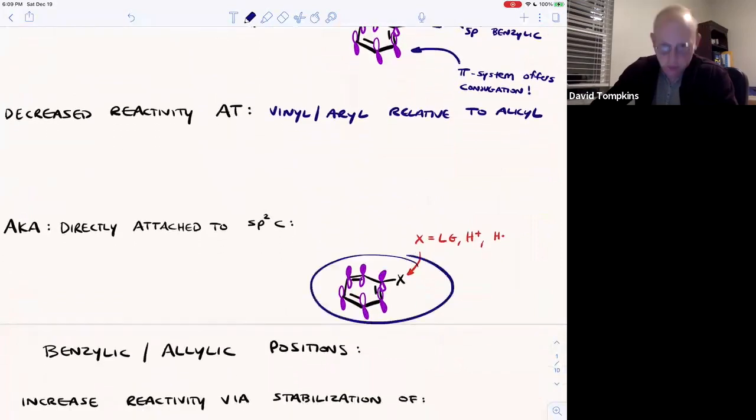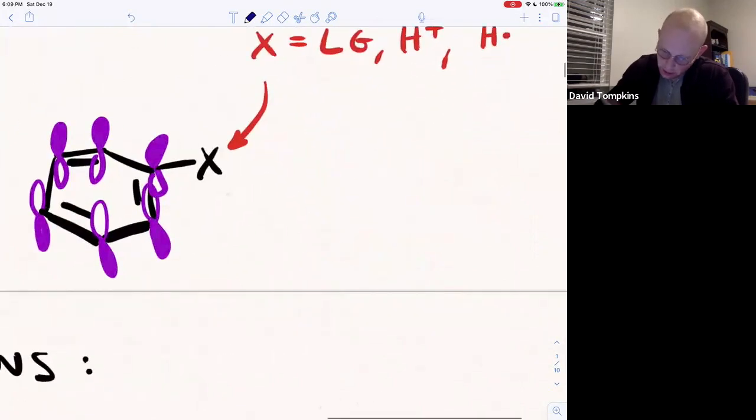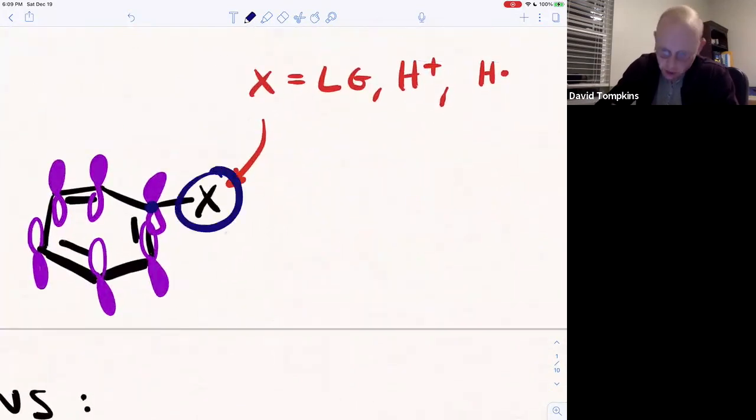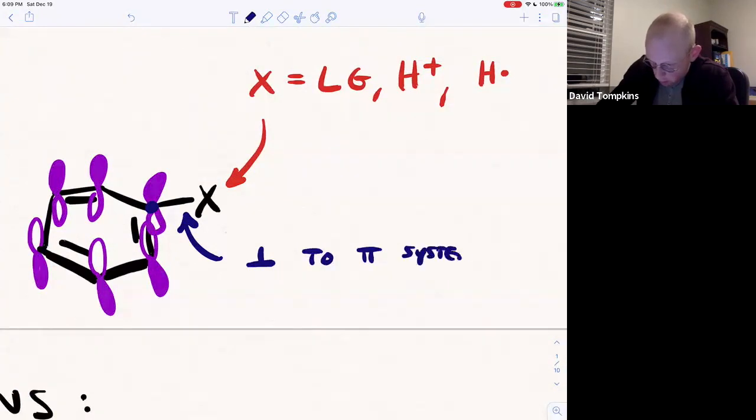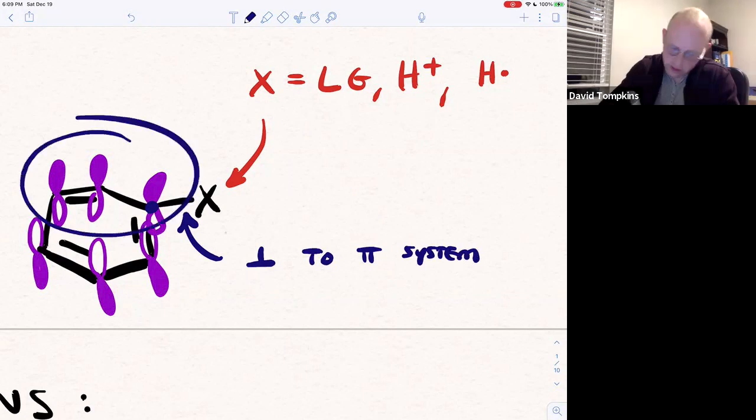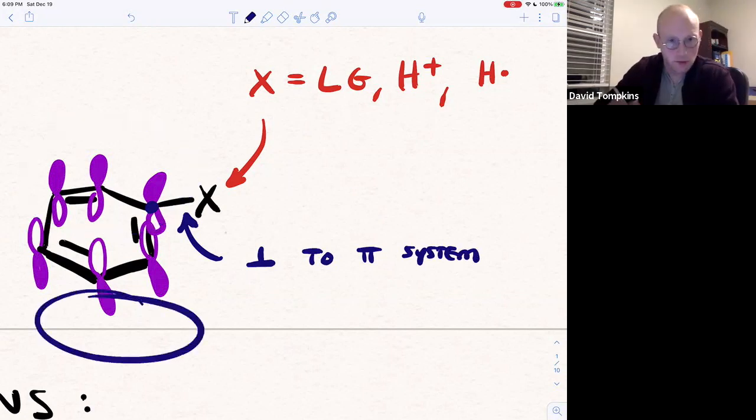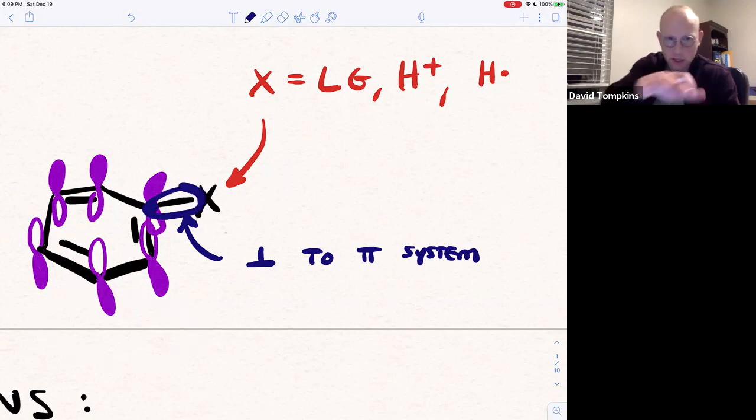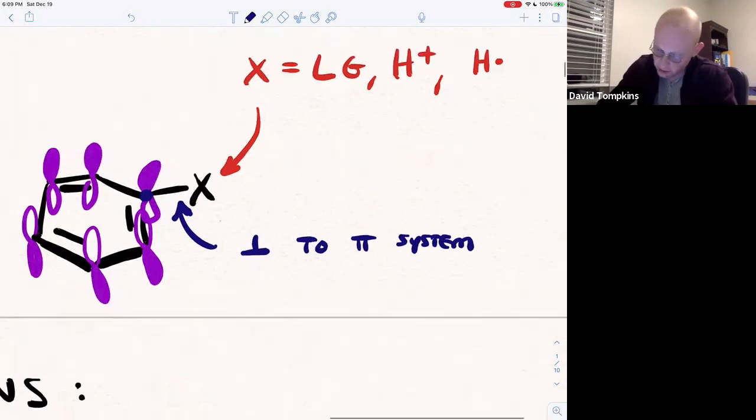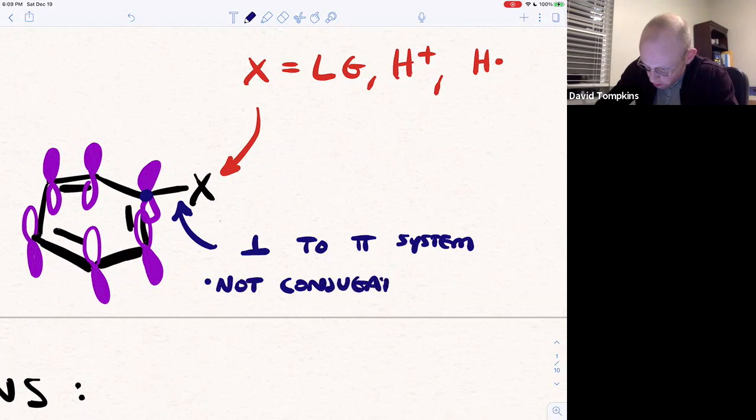Now, if you look at the aryl scenario, which is analogous to the vinyl, now this X atom, which could once again be a leaving group, a proton or a radical, it's very hard for that to react because this is actually perpendicular to the pi system. The pi system, that electron density is above the aromatic ring and below the ring. But this bond here to a substituent is exactly perpendicular to those pi electrons.